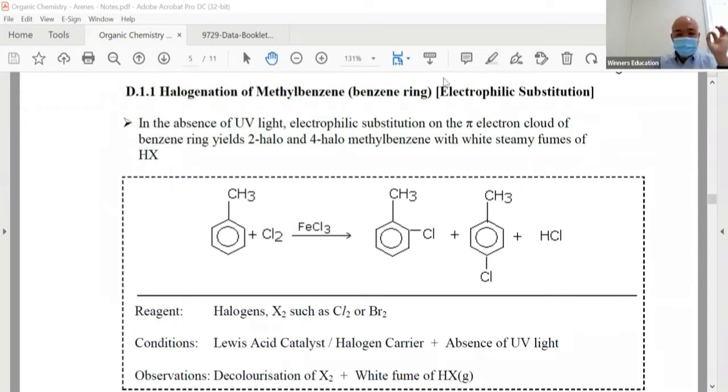First of all, we're going to talk about electrophilic substitution on the benzene ring. So halogenation of methylbenzene, let's talk about this first.